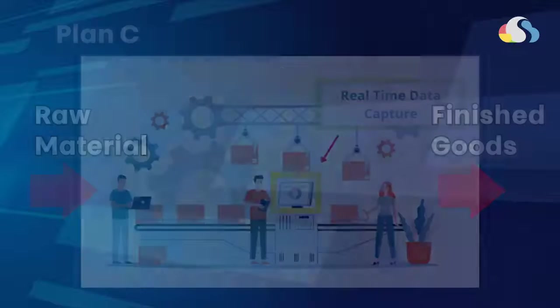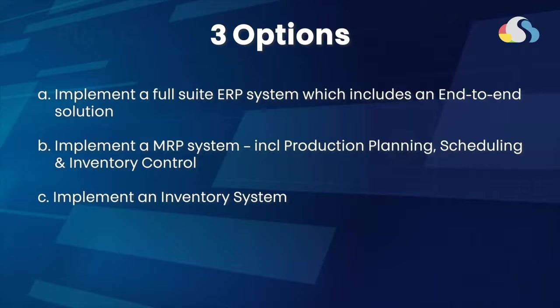Just by capturing these two pieces of information, PanRite can already get very valuable insight into what they need to do and how they can move forward. So the three options: A is to do a full suite — what they had in mind initially — but it has major obstacles, and for those reasons I would say pass, move on.